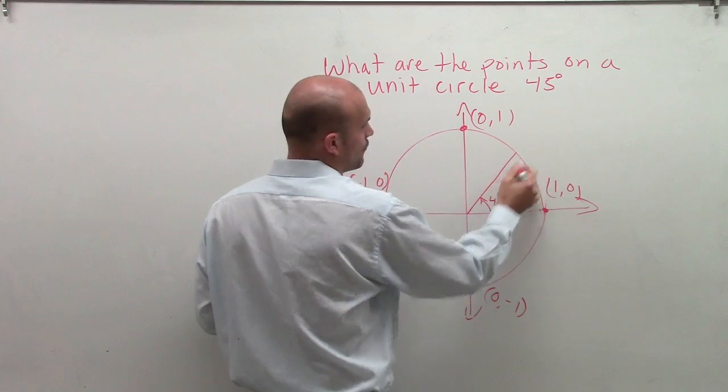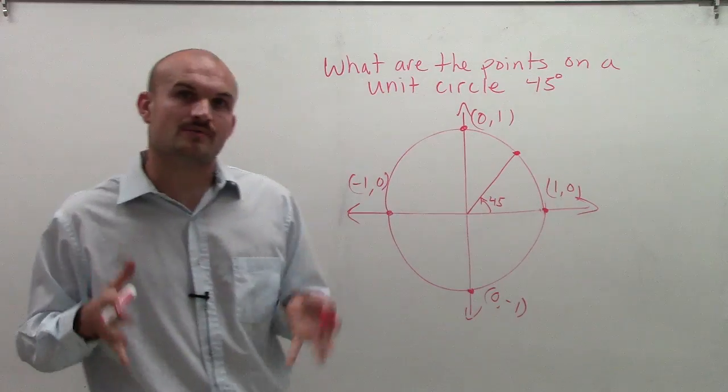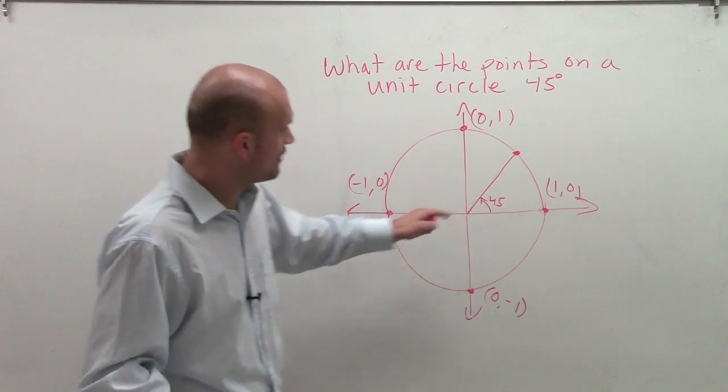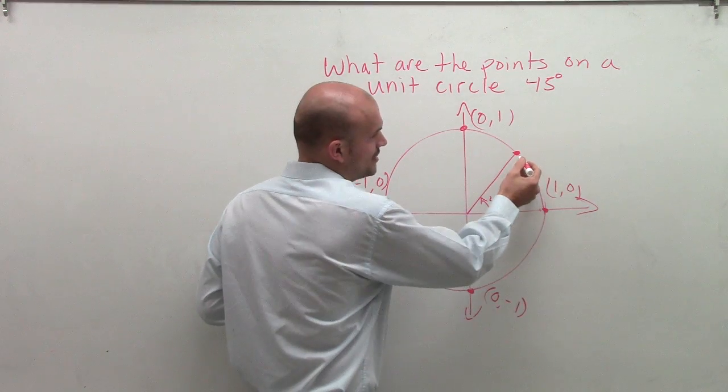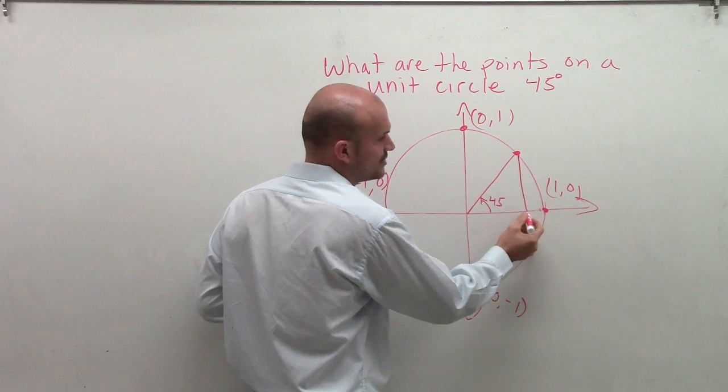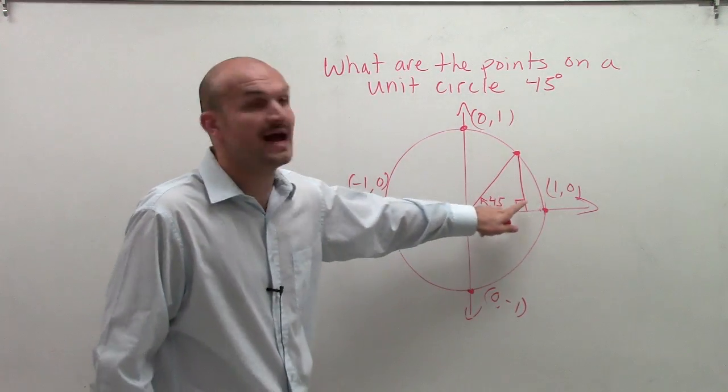Now, if I want to find where this line intersects the unit circle, I'm going to create a triangle. I know I have a 45-degree angle. To help create a triangle, I'll create a perpendicular line to the x-axis. Since it's perpendicular, that creates a 90-degree angle.